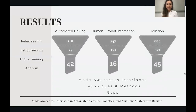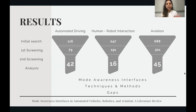At the end, we had 42 papers from automated driving, 16 papers from human-robot interaction, and 45 papers from aviation. From these results we had several subsections, but I will not go into detail of all these sections. Instead, I want to take you to the discussion points, which we found really interesting things from the literature review.